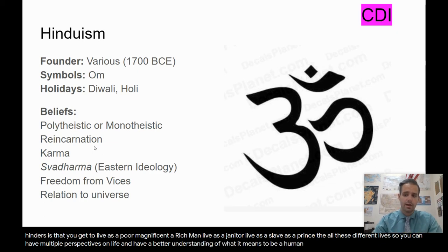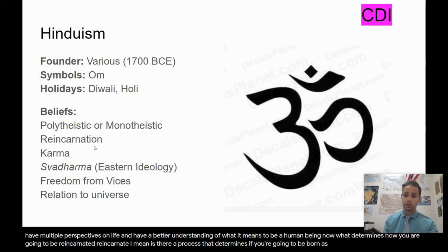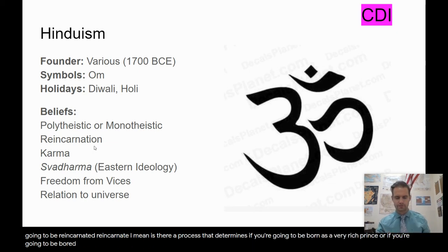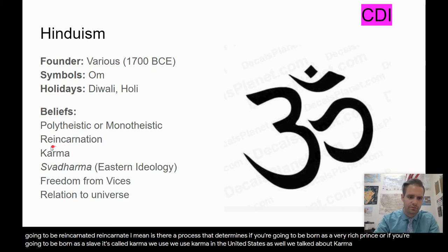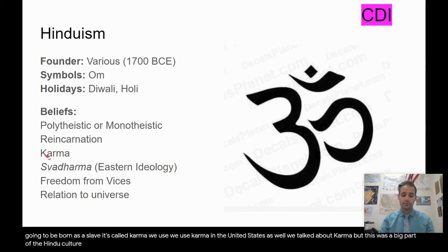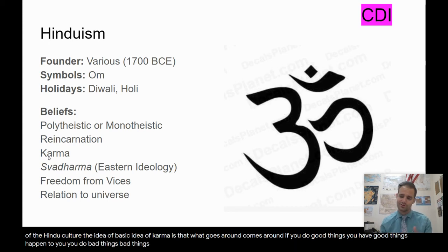Now, what determines how you are going to be reincarnated? Is there a process that determines if you're going to be born as a very rich prince or as a slave? There is a process, and it's called karma. We use karma in the United States as well, but it was a big part of Hindu culture. The basic idea of karma is that what goes around comes around: if you do good things, good things happen to you; if you do bad things, bad things happen to you.